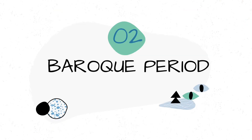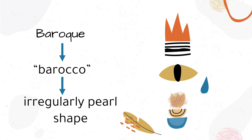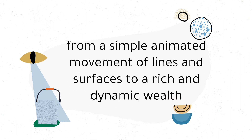The next period is the Baroque period. The Baroque is a style of architecture, music, dance, painting, sculpture, and other arts that flourished in Europe from the early 17th century until the 1740s. It comes from the Portuguese word 'Baroco,' which means irregularly pearl-shaped or stone. Baroque art wanted to reassert itself in the wake of the Protestant Reformation. Baroque existed in varying degrees of intensity, from a simple animated movement of lines and surfaces to a rich and dynamic wealth.